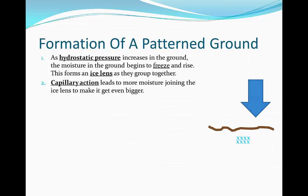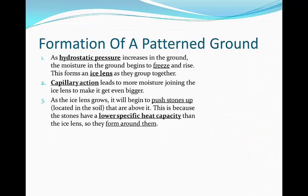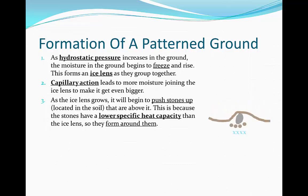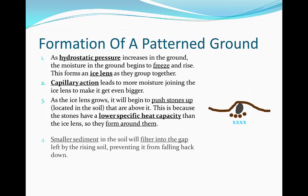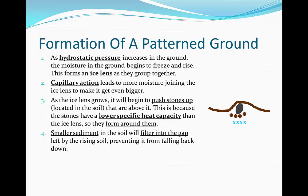So now we get even more. As the ice lens begins to grow, it will begin to push stones up. These stones are located firstly in the soil and get pushed up above it. This is because the stones have a lower specific heat capacity than the ice lens, so the ice begins to form around the stones. They begin to get pushed up, and smaller sediment in the soil begins to filter into the gap where the stone began to rise up. As a result, it now prevents the stone from falling back down.